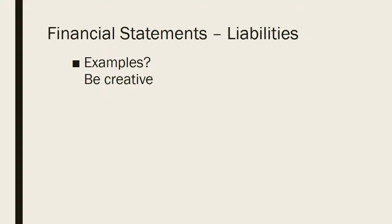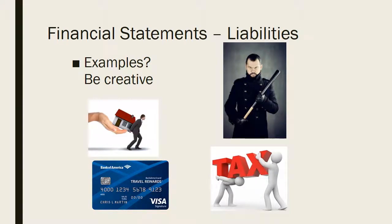I'd suggest pausing the video for a moment to think through what your current liabilities are in your life. Some of them are a little bit more obvious than others. For example, a mortgage is a liability. Your credit card is a liability — that's debt that you owe. Your taxes can potentially be liabilities — you could have a tax liability of what you owe to the IRS. There are lots and lots of forms of liabilities, more than we would actually think in many scenarios.